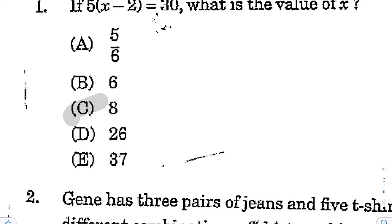In order to isolate x, the first thing you're going to have to do is divide by 5, because there's an invisible multiplication sign between the 5 and the parentheses. The opposite of multiplying is divide, so you're going to divide by 5 on both sides. That's going to cancel out the times 5 on the left, and you'll be left with x minus 2. On the right side, you also divide by 5, and 30 divided by 5 gives you 6.